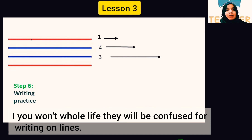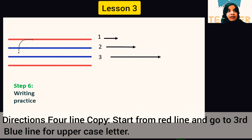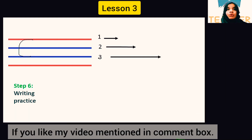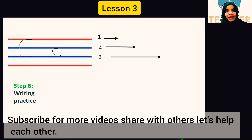On 4-line paper, tell them to start uppercase from the red line and adjust to the blue line — the third blue line. If they are confused with color recognition, write numbers on the lines. Touch the first line and go to the third line for uppercase C. For lowercase, write between lines 2 and 3, making the same formation.